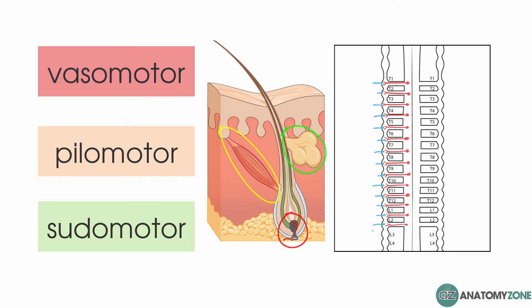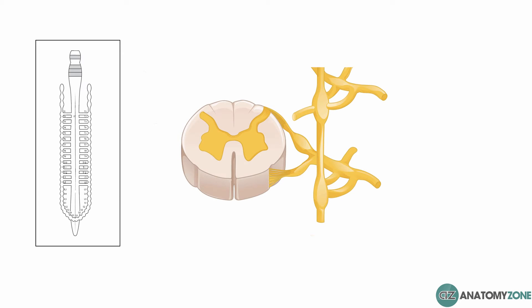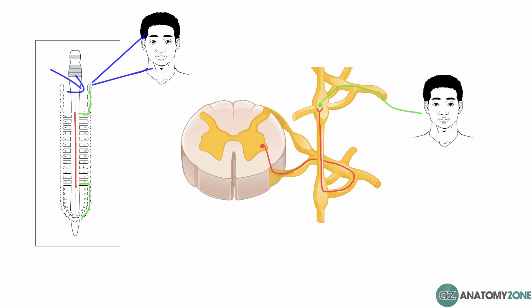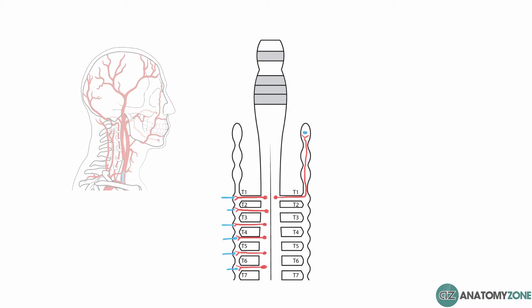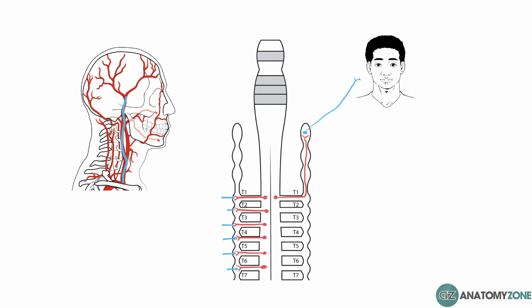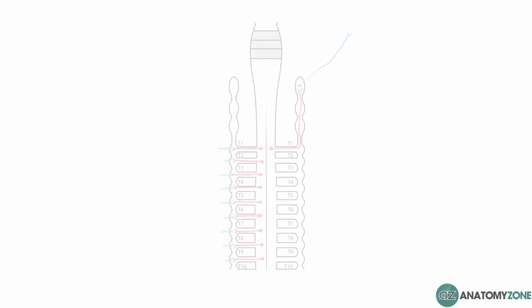Next we'll take a look at the visceral distribution of the sympathetic nervous system, and this is where things get a little bit more interesting. Remember we talked about how the neuron could enter the sympathetic trunk and ascend or descend. This is the case for sympathetic innervation to the head and neck, and also to lower abdominal and pelvic viscera through sacral splanchnic nerves. Head and neck sympathetic fibres arise from the ganglia in the sympathetic chain and supply the skin and the eyes. The neuron ascends into the cervical ganglia and then the postganglionic fibre ascends along blood vessels — the vertebral arteries and the internal carotid arteries — that go to the head and neck.